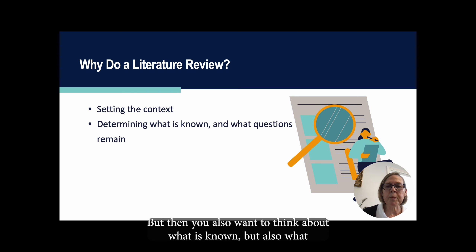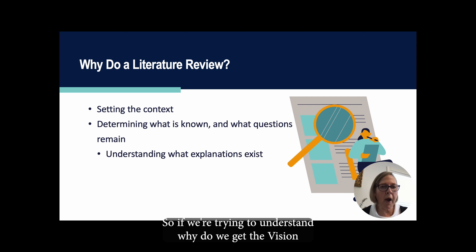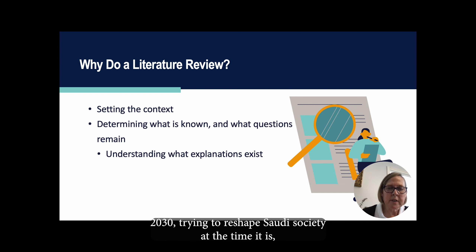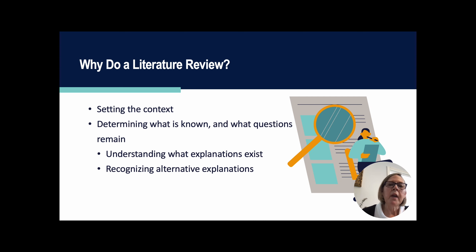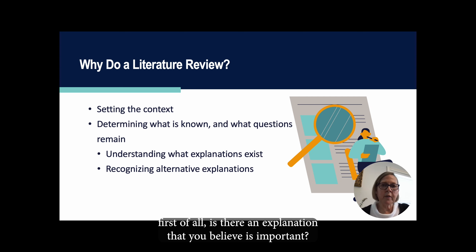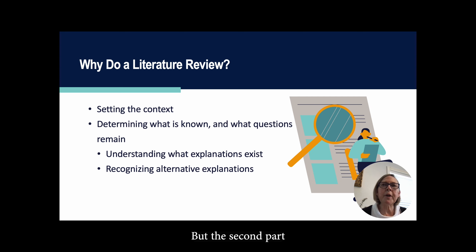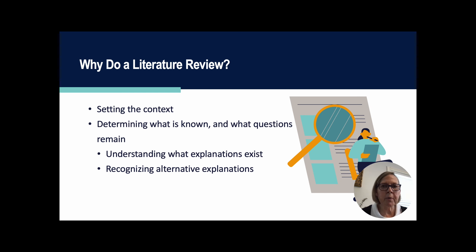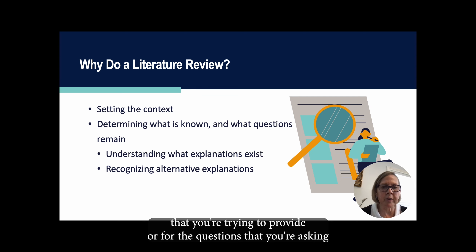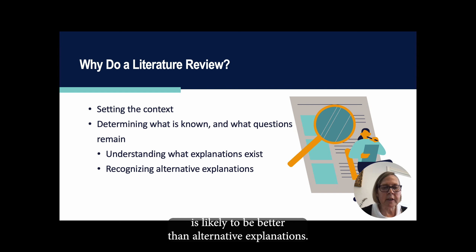You also want to think about what is known, but also what questions remain. We think about this as finding the gaps in the literature. So if we're trying to understand why we get Vision 2030 trying to reshape Saudi society at the time it is, what explanations already exist for this specific question? You're trying to think about whether there's an explanation that you believe is important but hasn't been written. If it has been written, you may not need to do the study. But you also need to recognize that when people have come to a different answer than you do, those are alternative explanations. You need to address why your specific answer is likely to be better than those alternatives.